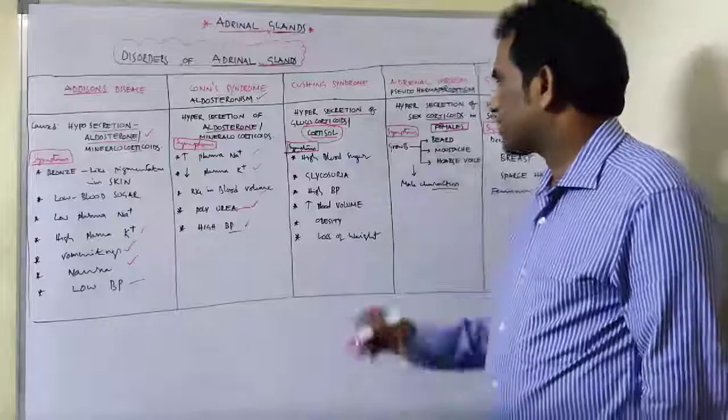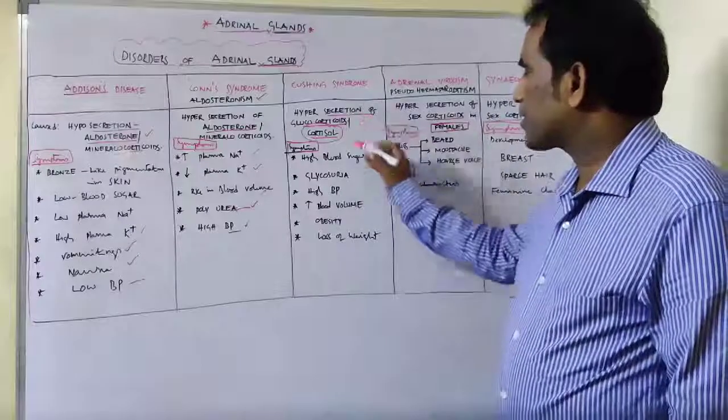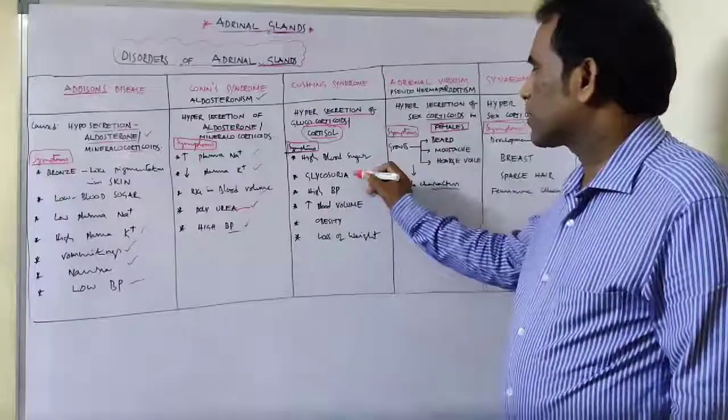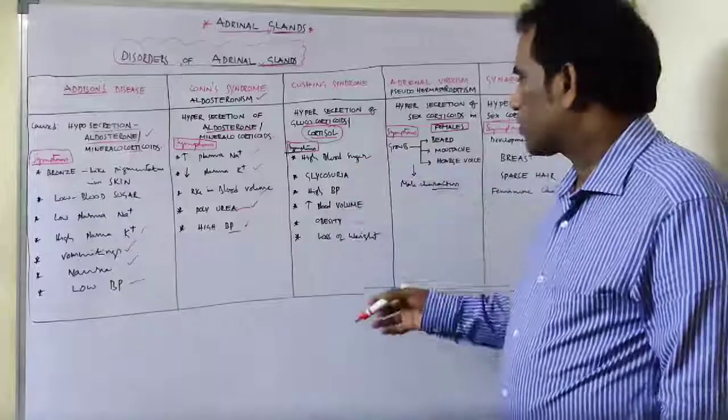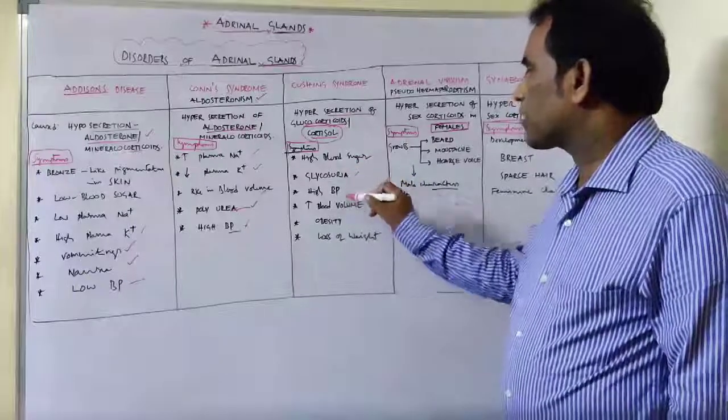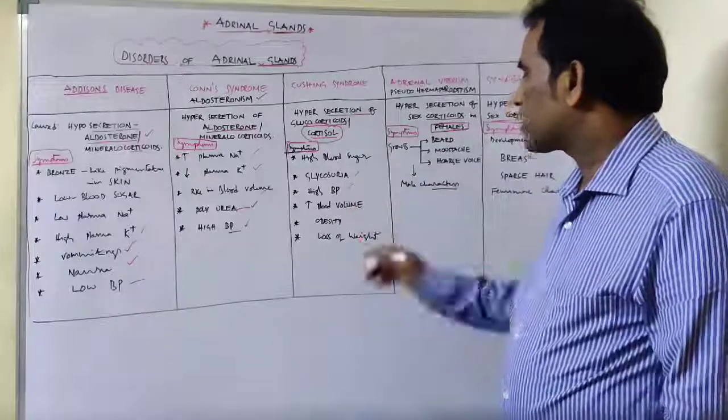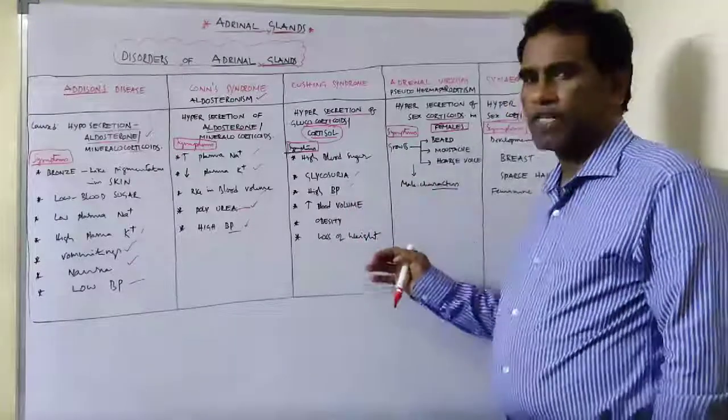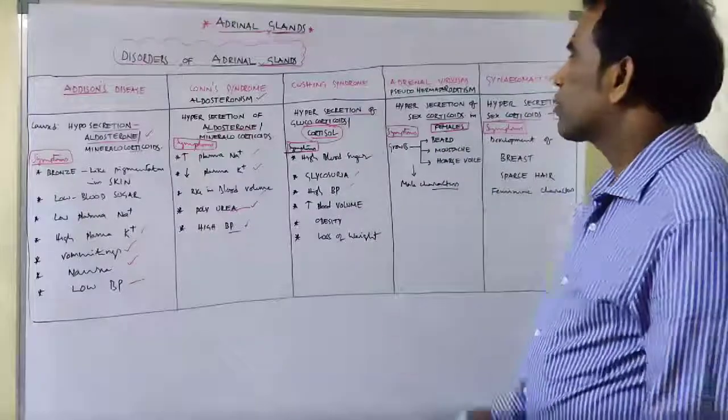The symptoms of Cushing syndrome include high blood sugar, glycosuria meaning urine containing glucose, high blood pressure, increased blood volume, and obesity. These are the symptoms of Cushing syndrome.